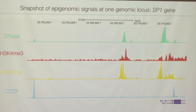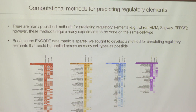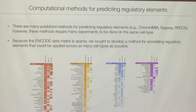There are many computational methods — some fancier than others — for predicting regulatory elements, including machine learning supervised and unsupervised approaches. ENCODE members have authored several such algorithms, such as ChromHMM by Manolis Kellis, Segway by Bill Noble, and RFACS by Bing Ren. These algorithms typically require many experiments on the same cell type. My lab wanted to develop a method to annotate regulatory elements applicable to as many cell types as possible, since many cell types do not get covered by all required assays.